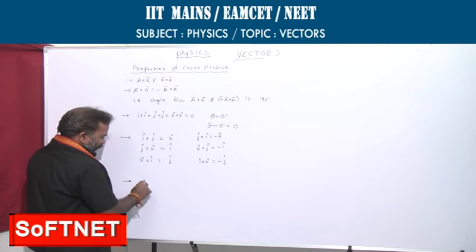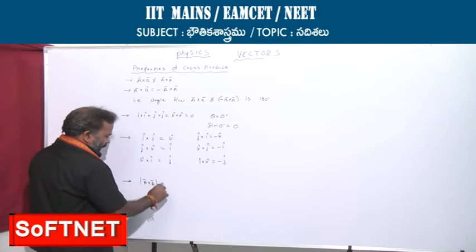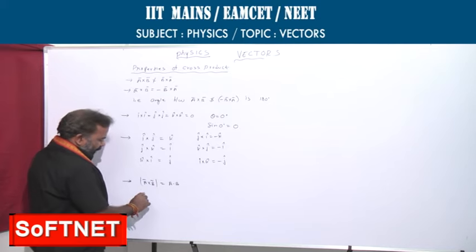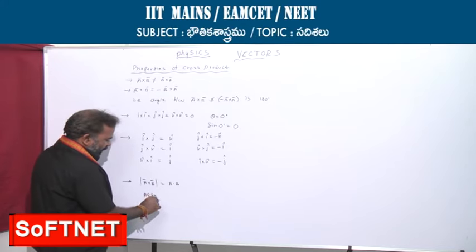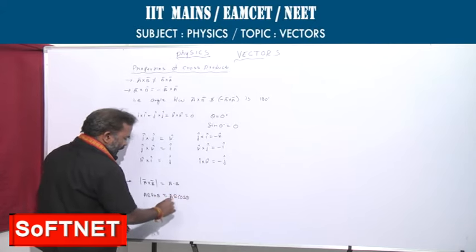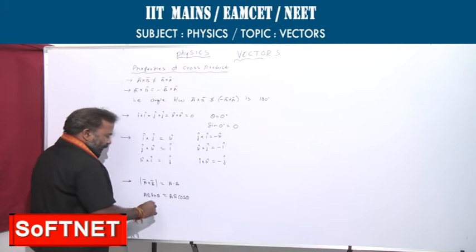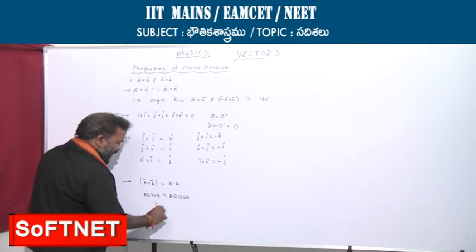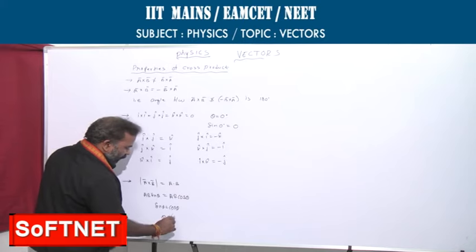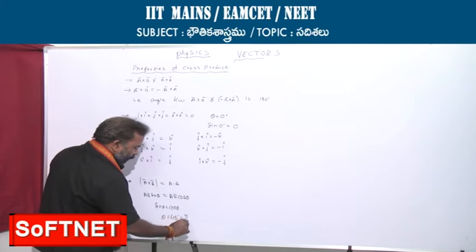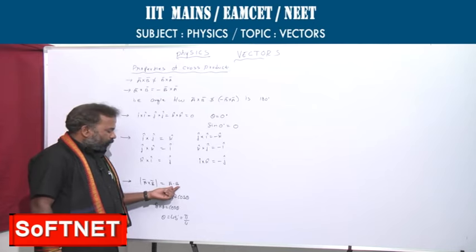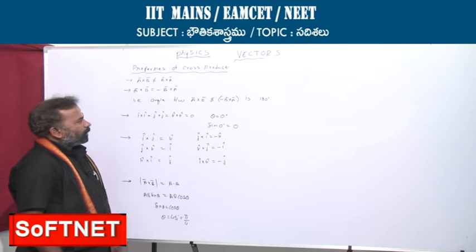If the magnitude of A bar cross B bar equals A bar dot B bar, then AB sine theta equals AB cos theta, so sine theta equals cos theta. That means it happens only when theta is 45 degrees or pi by 4 radians. The magnitude of cross product of two vectors equals the magnitude of dot product of two vectors when the angle between them is 45 degrees.